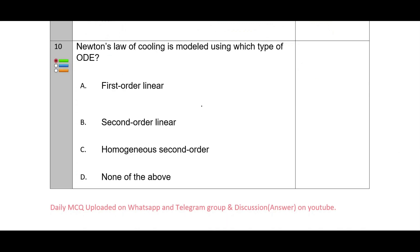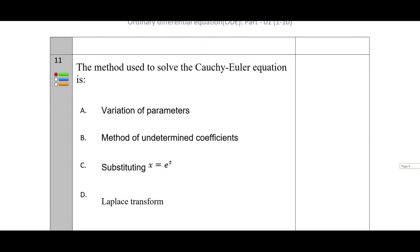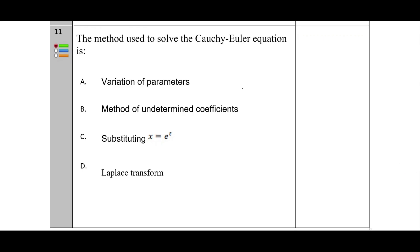Newton's law of cooling is modeled using a first-order ordinary differential equation. The equation is dT/dt = −k(T − Ts), where Ts is the surrounding temperature. This is a direct question. For question eleven, the method used to solve the Cauchy-Euler equation has the correct option C — using the substitution x = e^t. I hope this video is useful for preparing the PGTRB exams.